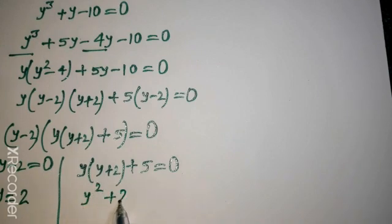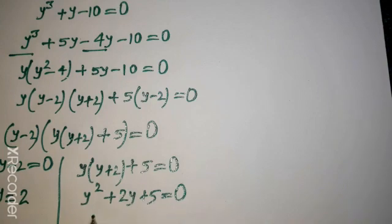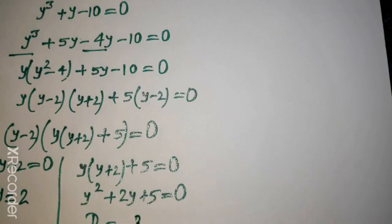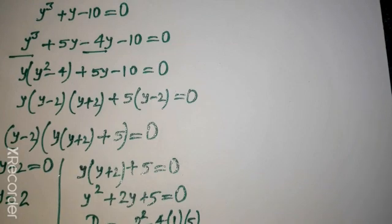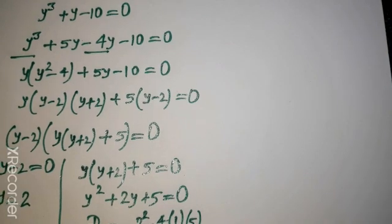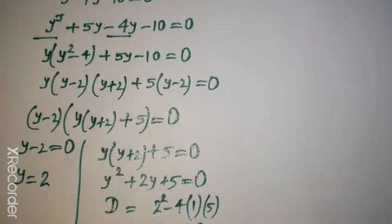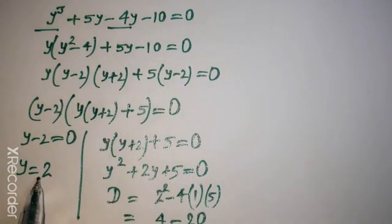For y squared plus 2y plus 5 equal to 0, we find the discriminant: b squared minus 4ac equals 4 minus 20, that is minus 16, which is less than 0. So we will not consider this because it is not real.